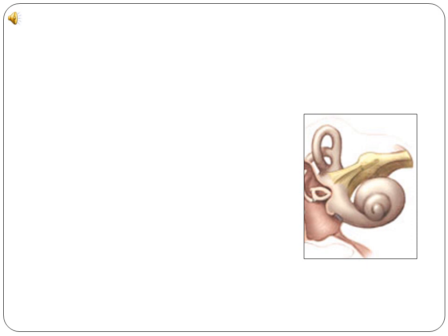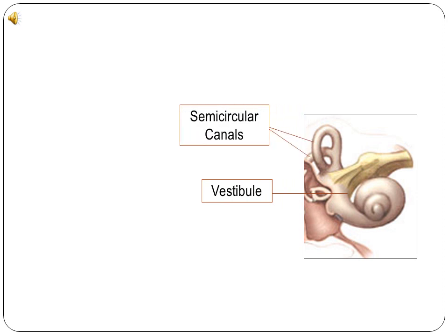Also within the inner ear are the vestibule, which provides static equilibrium, and the three semicircular canals, which provide dynamic equilibrium along the three axes. Nerve impulses from the sensory organs within these structures are passed along the vestibular nerve.